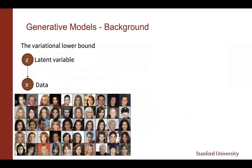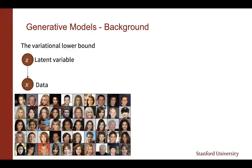Let me start with a little background about generative models. One main application of generative models is to generate photorealistic human faces. We assume there is a latent variable — which is unknown — that can characterize our data. Even though faces have the same structure with two eyes, a nose, and a mouth, there's variation in the data that can potentially be captured by a latent variable. Our goal is to maximize the likelihood of the data by learning a model, which can be done by marginalizing over the latent variable.